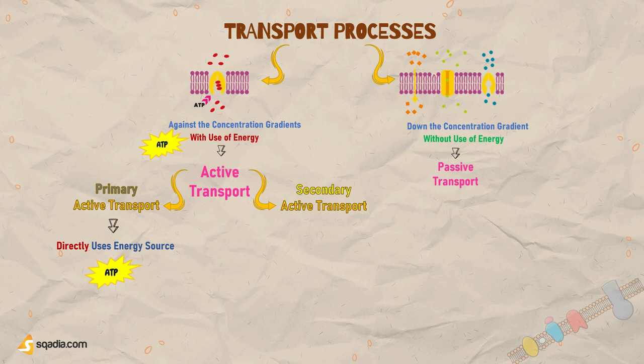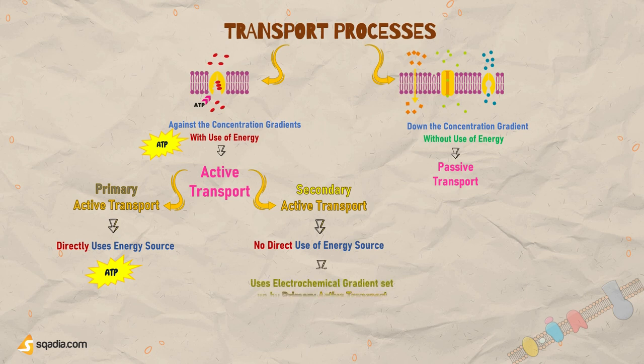Secondary active transport, however, does not need a direct source of energy. Instead, it utilises an electrochemical gradient set up by the primary active transport of another molecule as an energy source to move molecules against the gradient.